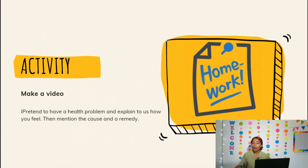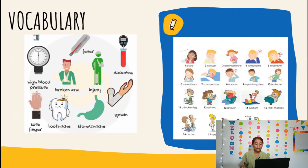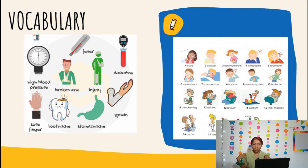What about our activity or homework? It's really easy, so don't be afraid. You need to make a video — record a video. The instructions say: pretend to have a health problem and explain to us how you feel, then mention the cause and a remedy. For example, I can choose having a fever — I feel really bad, I have a cold, and this fever is really terrible.